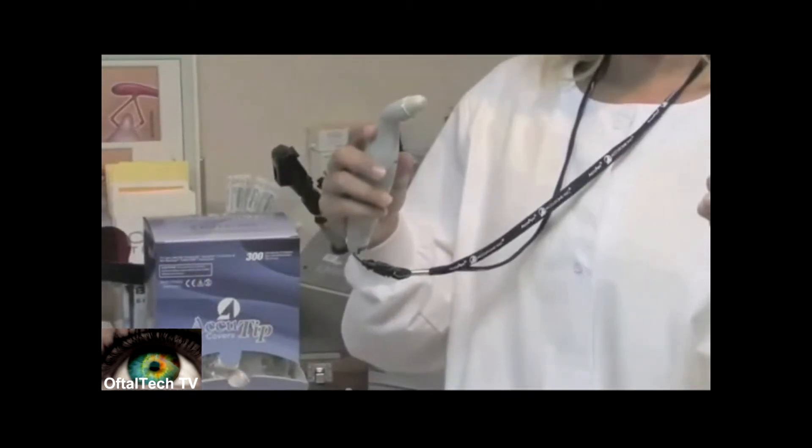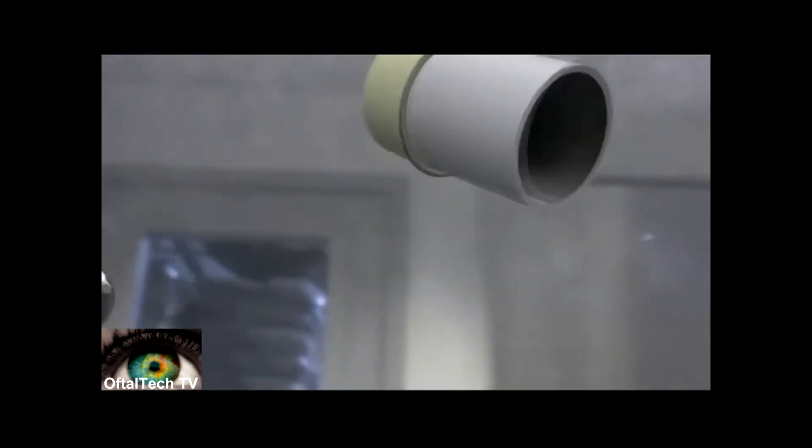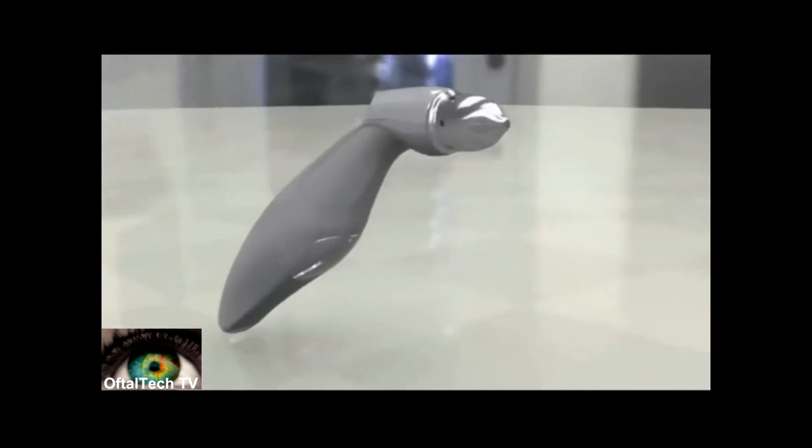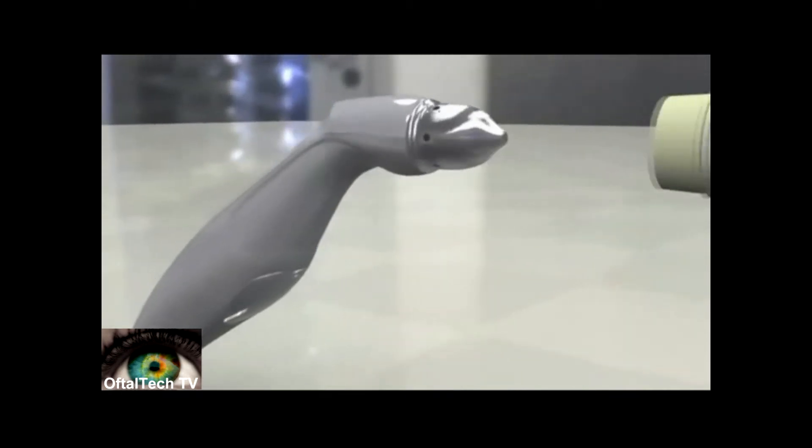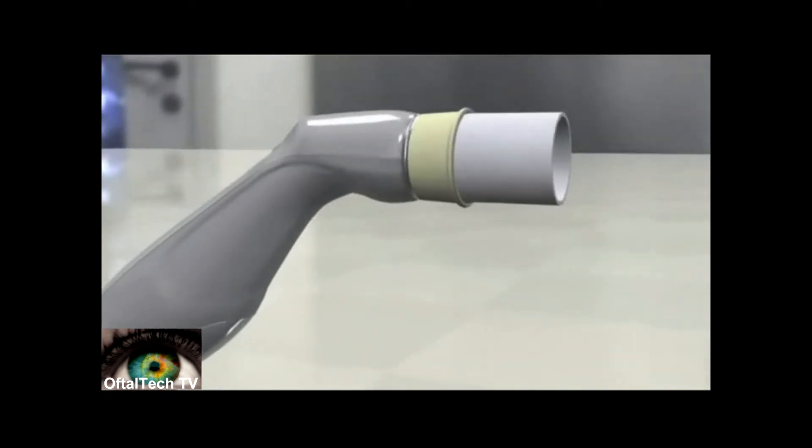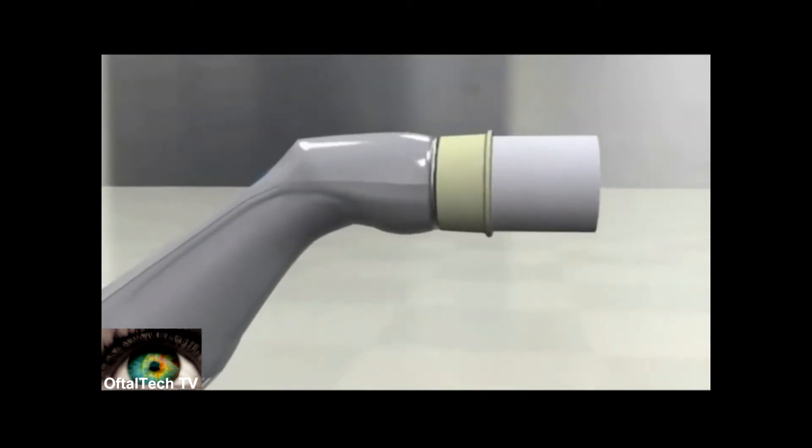AccuTip covers eliminate cross-contamination and protect the transducer tip from dust and liquids that could potentially damage the unit. AccuTip covers can be purchased directly from Accutone or authorized Accutone distributors.